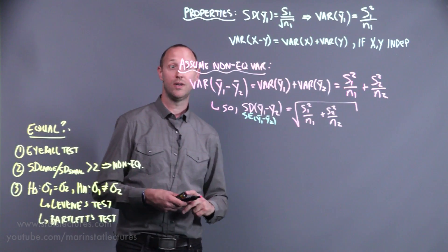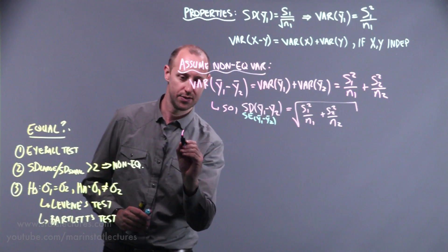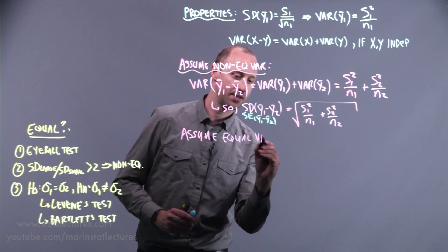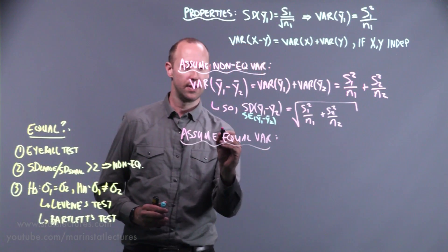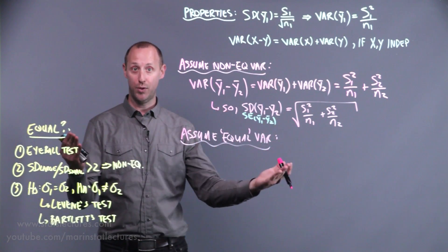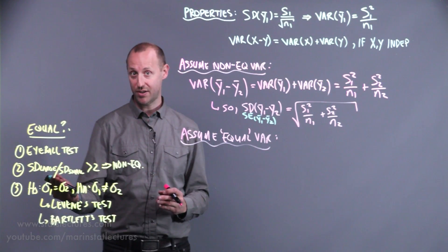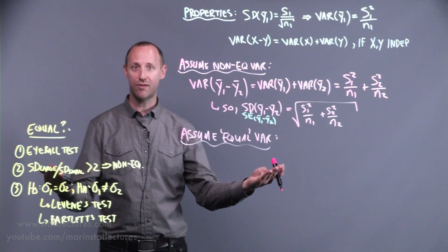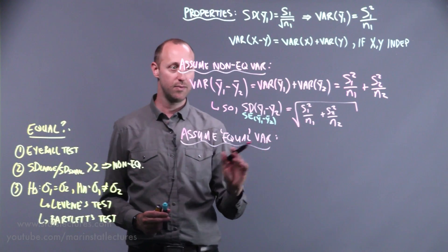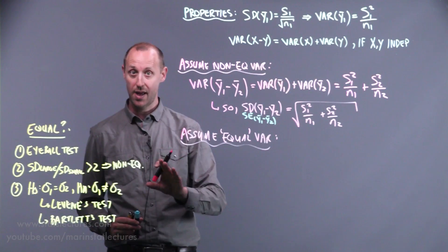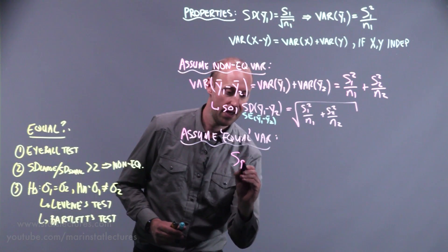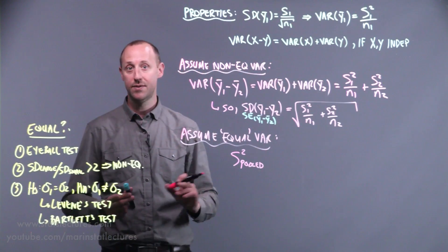Now let's look at assuming equal variances. This assumption says that at the population level we believe the variability around the mean for group 1 and group 2 are roughly the same — in other words, the sample standard deviation for group 1 and the sample standard deviation for group 2 are two different estimates of that same common variance.